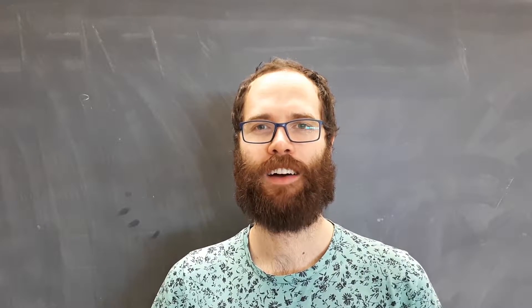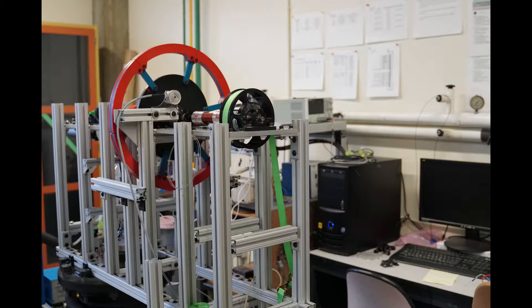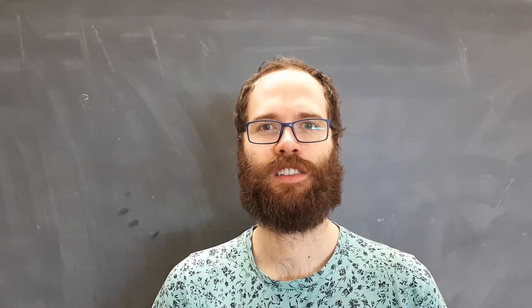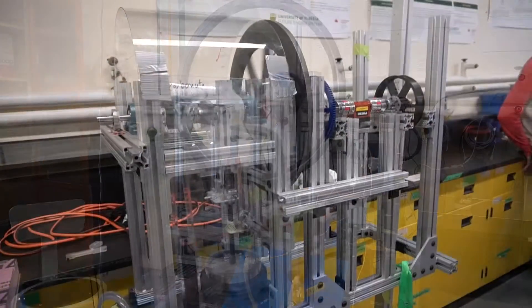Hello everyone, my name is Callan Stumpf and I'm an MSc student here at the University of Alberta. A Stirling engine is a machine that is able to transform heat into electricity by a mechanical process. In the lab where I work we employ different types of Stirling engines and try to increase the performance of them so that they can produce the most amount of power from the littlest amount of heat.